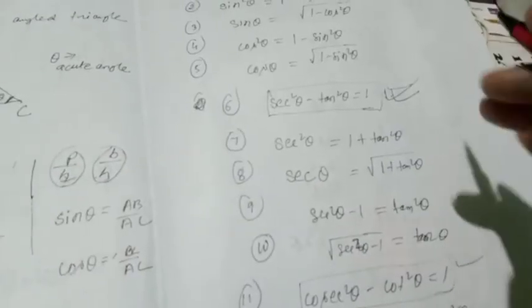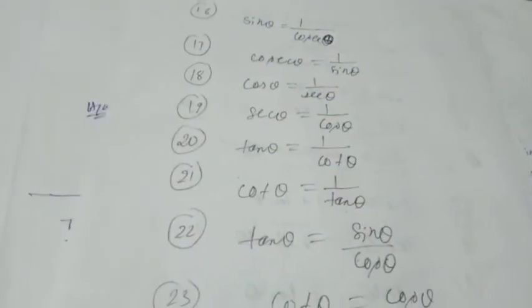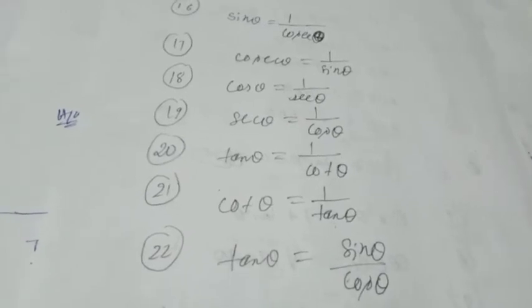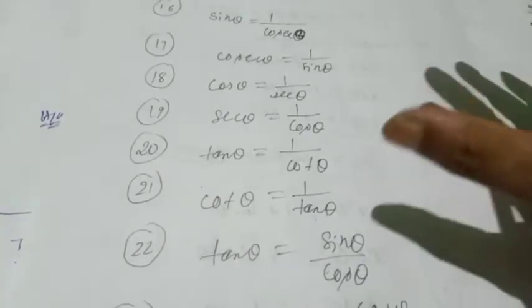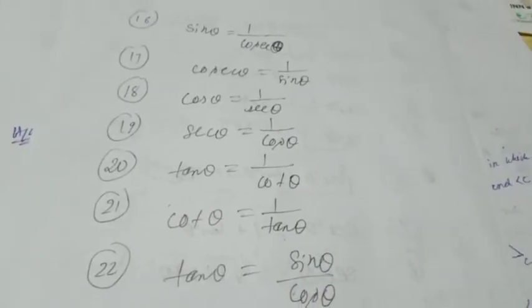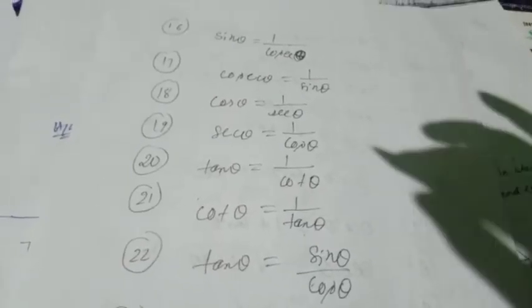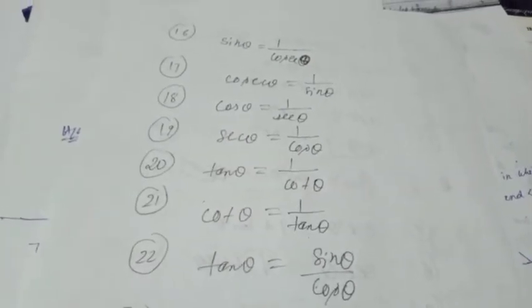I suggest you take two pages and write all the relations in order: first the ratios, then the trigonometric table, then complementary angle relations, then these identity-derived relations, then the reciprocal relations like cos θ = 1/sec θ. When solving problems, refer to your notes. Slowly, within five or six days, you will remember them automatically. Remember, in an exam these relations will not be provided — you must memorize them.